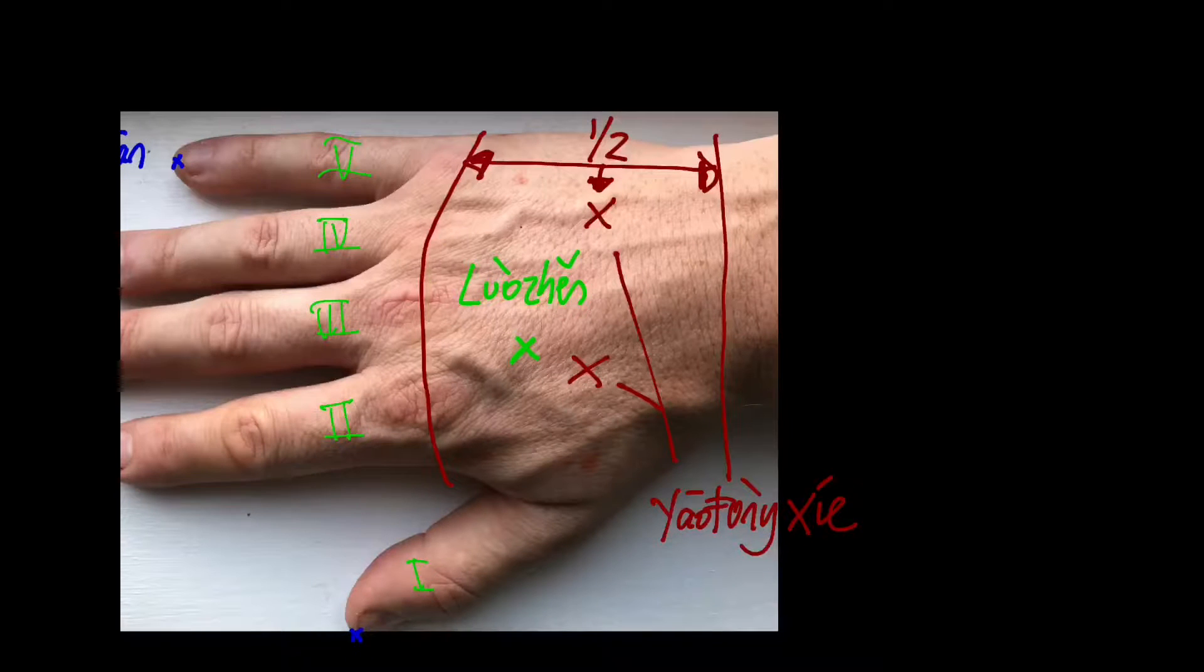The yatong shui points are found midway between the knuckles and the wrist crease, in between the two metacarpals of 2 and 3, and 4 and 5, just distal to where these bones meet.